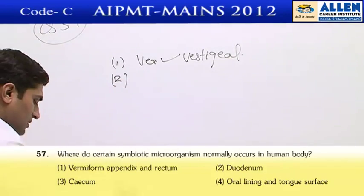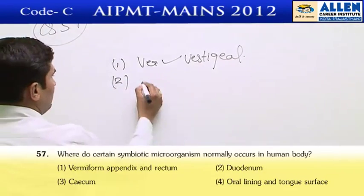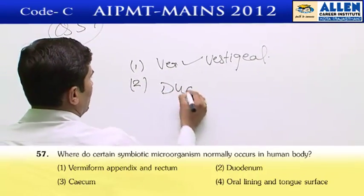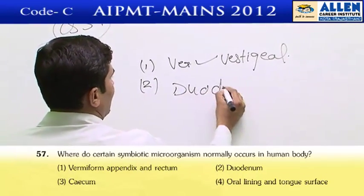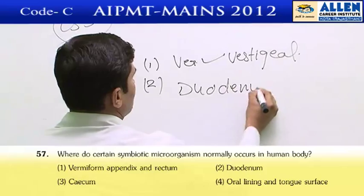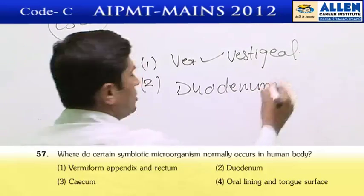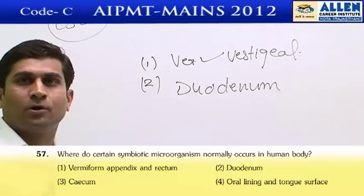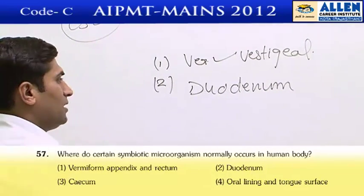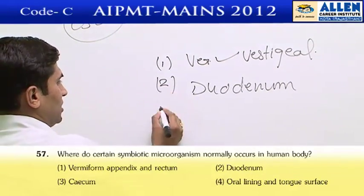Option two is the duodenum. The duodenum is the site of maximum digestion, so there are no symbiotic microorganisms here. Maximum digestion occurs here.